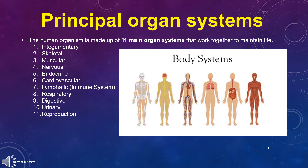The 11 organ systems are: integumentary, skeletal, muscular, nervous, endocrine, cardiovascular, lymphatic, immune system, respiratory, digestive, urinary, and reproductive.